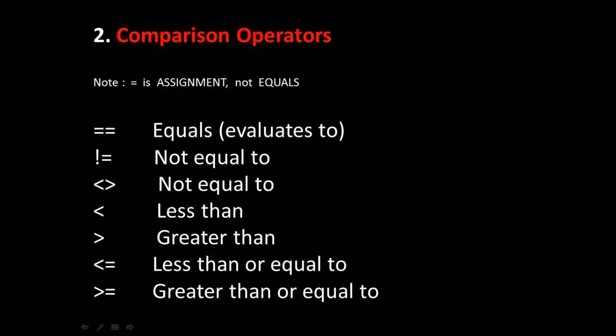In mathematics, to say equals it only requires one equal symbol. But in programming, to say equals is evaluates to, and that requires two equal symbols right next to each other. A common mistake people make when they first get into programming is confusing assignment with equals.